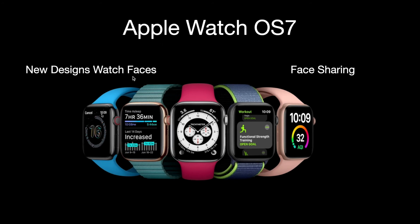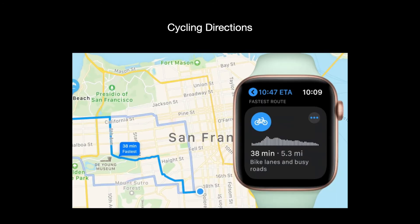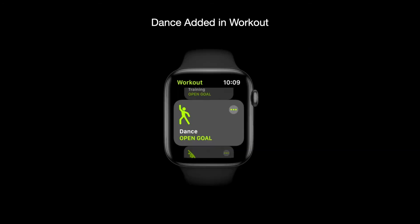With Apple Watch OS 7, they came up with new designs for watch faces, and you can share these faces with friends who can download and use them on their own Apple Watch. Cycling directions added in iOS 14 are also available in watchOS 7, so you can see cycling directions right on your Apple Watch.